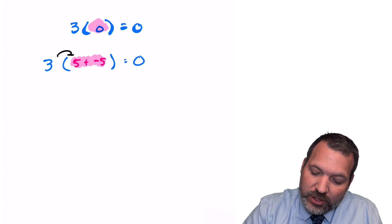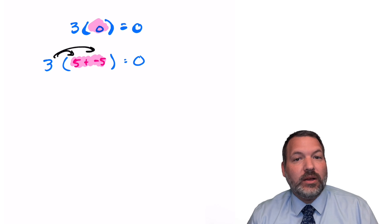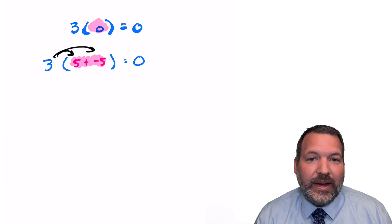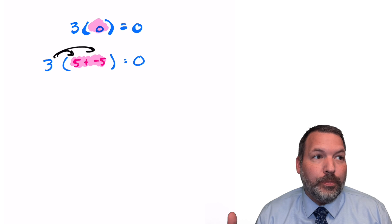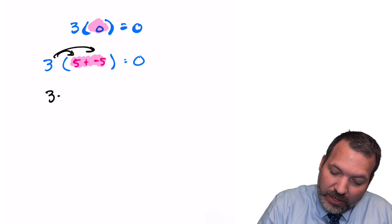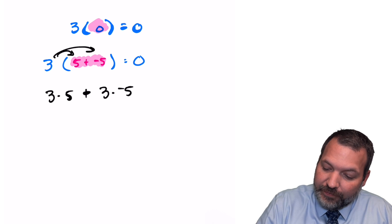From here, I'm gonna use what we call the distributive property, or what I tell my students is the claw. The distributive property here says that we can actually perform the multiplication before we perform the addition. So this has to be the same thing as three times five plus three times negative five.